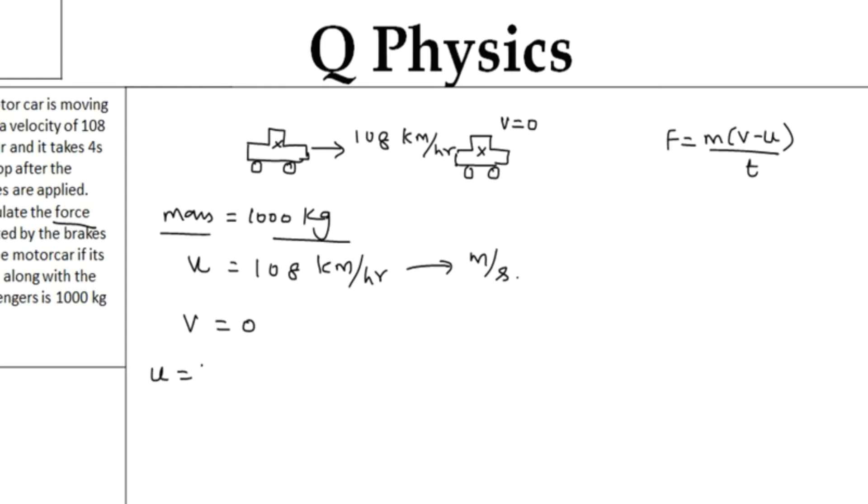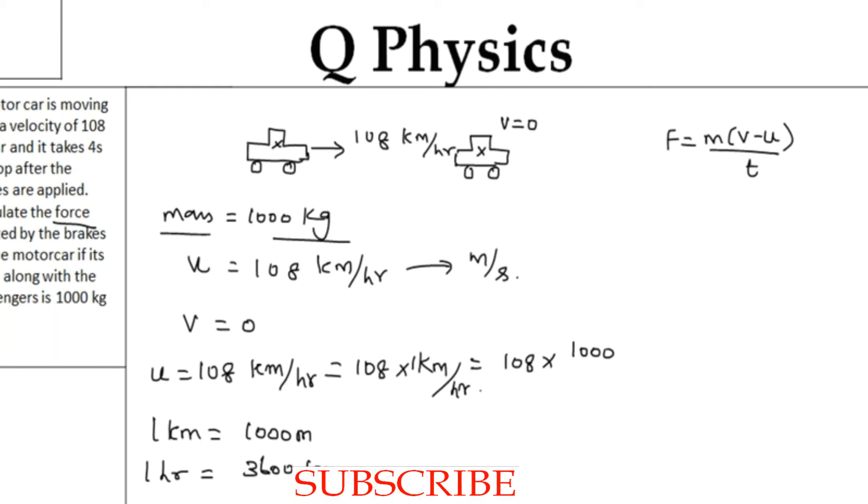u equal to 108 kilometer per hour. This can be written as 108 into 1 kilometer per hour. One kilometer equals 1000 meters, and one hour equals 3600 seconds. If I substitute in the above equation, I am going to get 108 into 1000 meter by 3600 seconds.